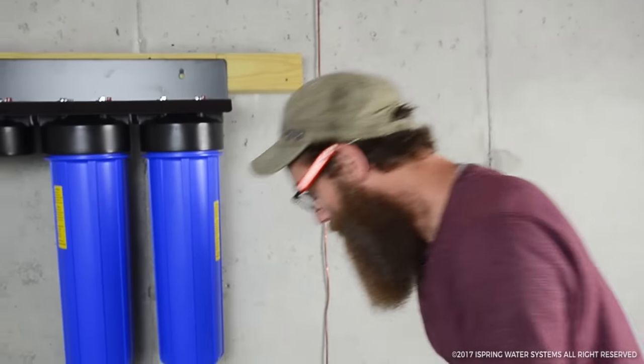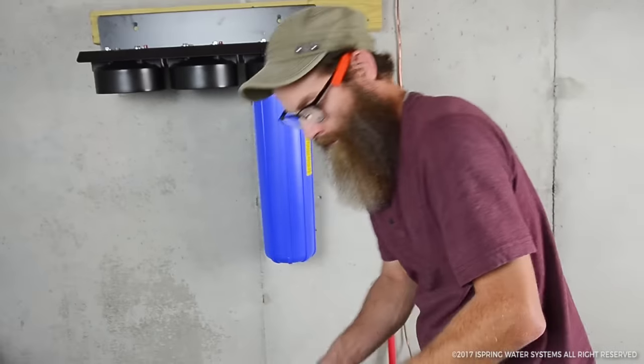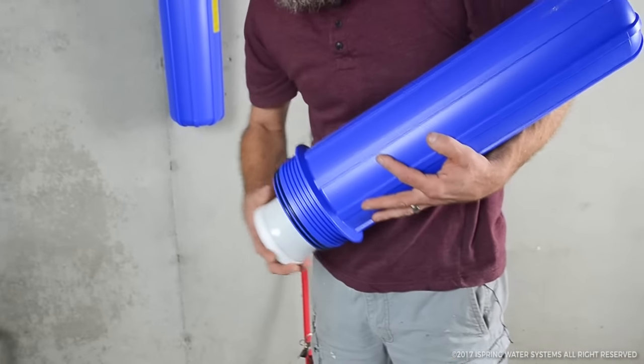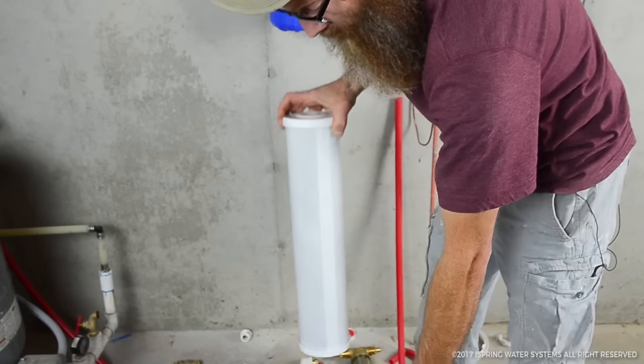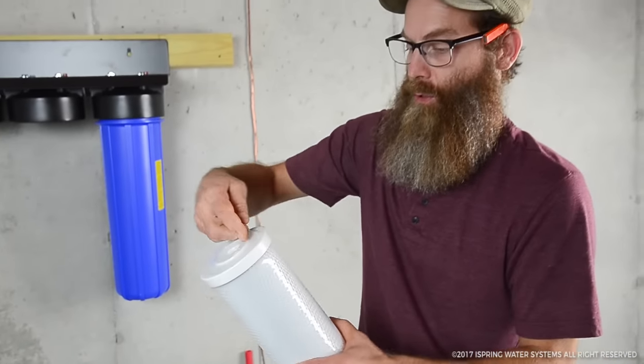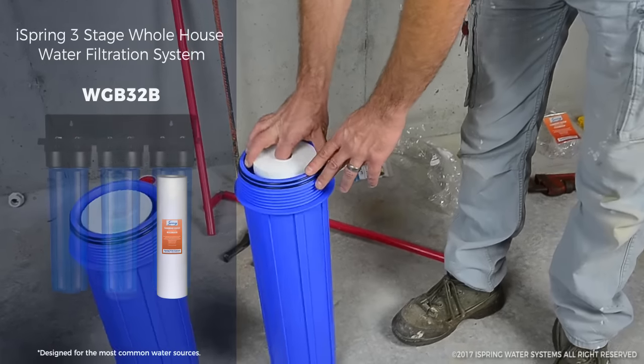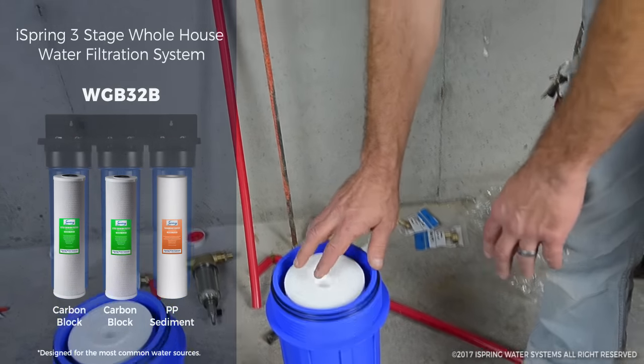So let me show you how some of these things go together. These are the filters and they are still sealed with plastic so we have to open these. So the first filter in the line is a sediment filter. It picks up the particles and sand, rust and scale.